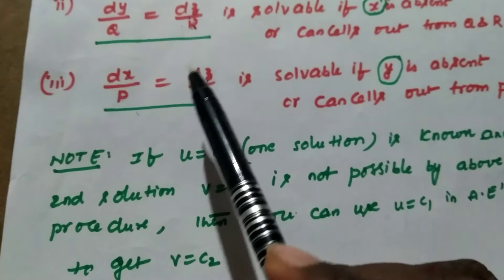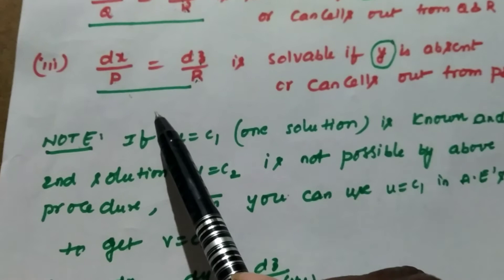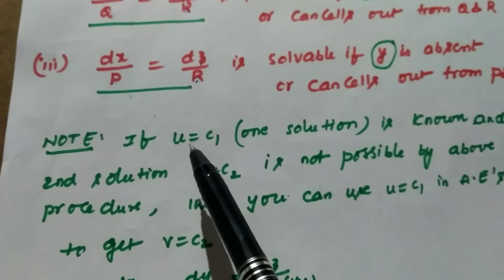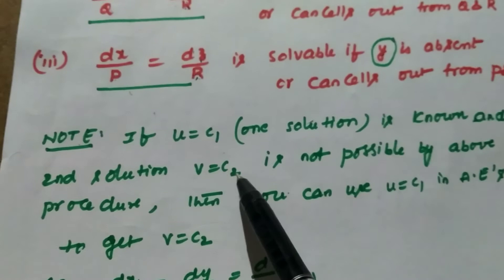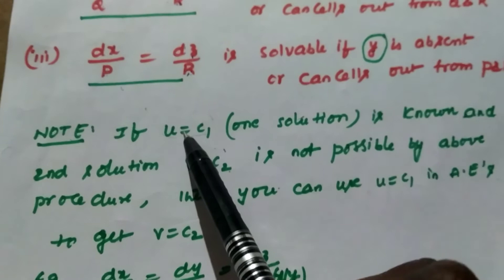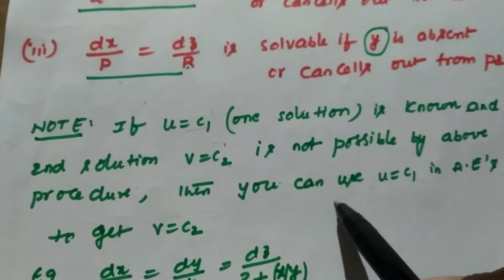Note: to write the general solution f of u comma v equal to zero, you must have two linearly independent solutions. In some problems you can find one solution u equal to c1, but you cannot find the second solution using the above procedure. In that case you can use the solution obtained previously from the auxiliary equations to get the second solution.